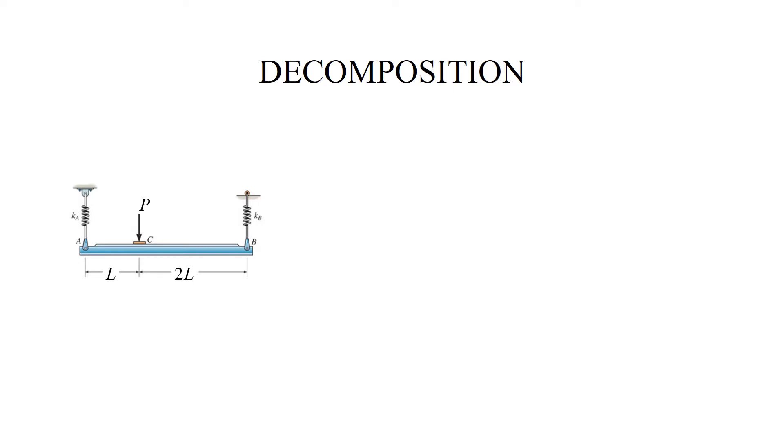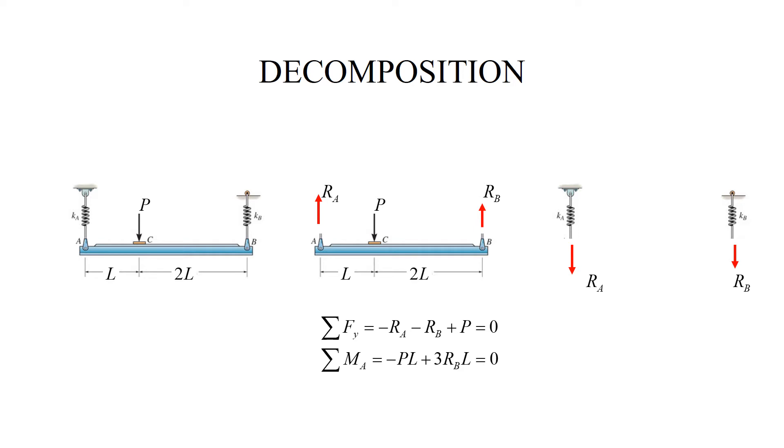Let us begin with a free body diagram for the beam. Again, I have two reaction forces. These reaction forces by the third law are reapplied to the springs. And of course, by looking at the free body diagram for the beam, I can write down basic equilibrium equations and determine that the reaction forces are 2P over 3 on this side and P over 3 on the right.